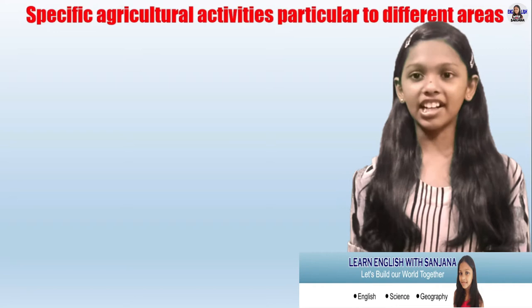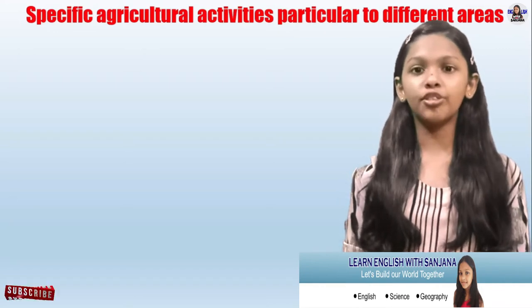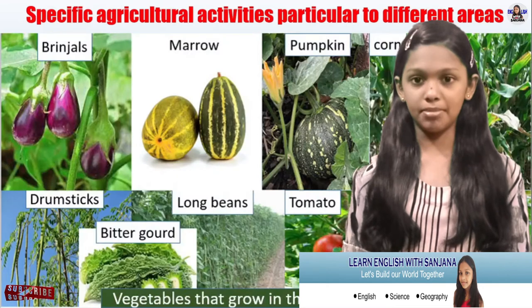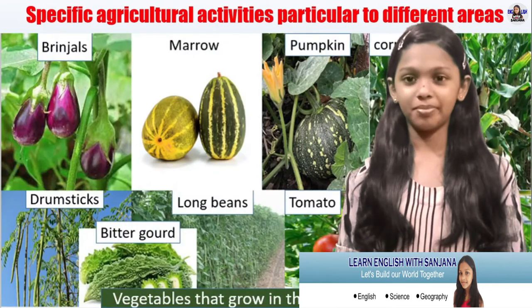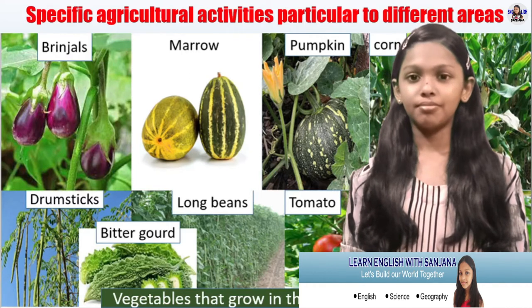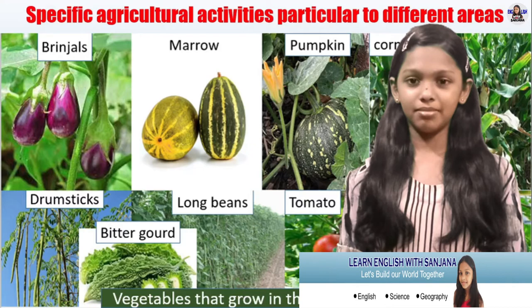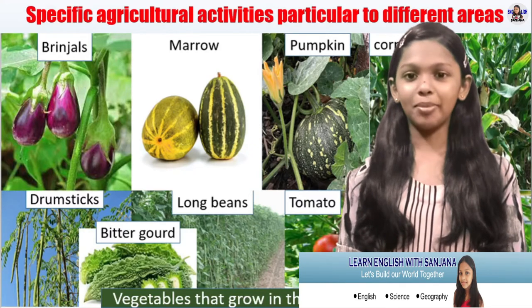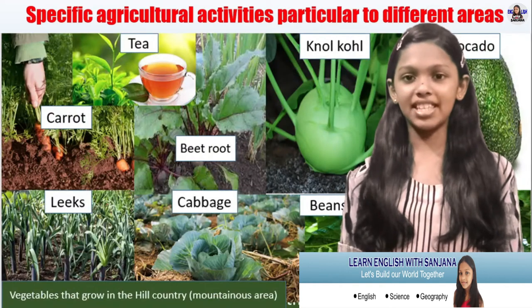Now I am going to tell you specific agricultural activities particular to different areas. Here are some names of vegetables that grow in the dry zone: brinjals, marrow, pumpkin, drumsticks, bitter gourd, long beans, and tomato.